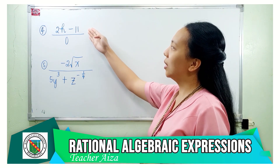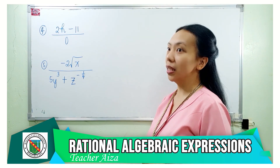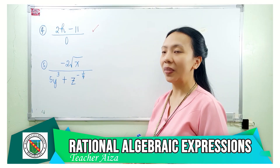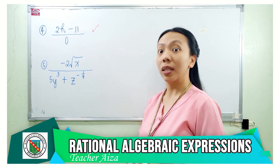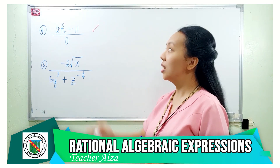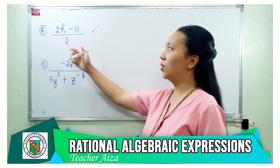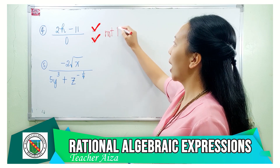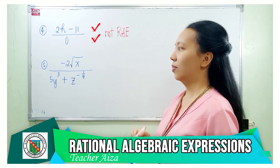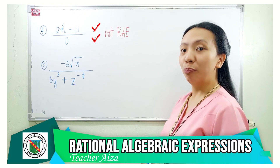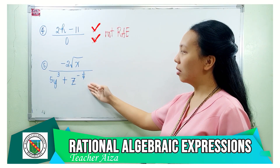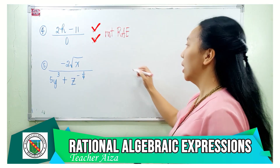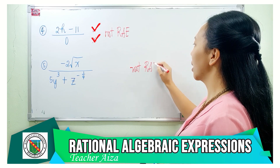Let's find out. In number 4, is the numerator 2h minus 11 a polynomial? Yes. Is the denominator a polynomial? Yes. However, the denominator is 0. Therefore, this expression is not a rational algebraic expression. Number 5: both the numerator and the denominator of this expression are not polynomials. Therefore, it is not a rational algebraic expression.